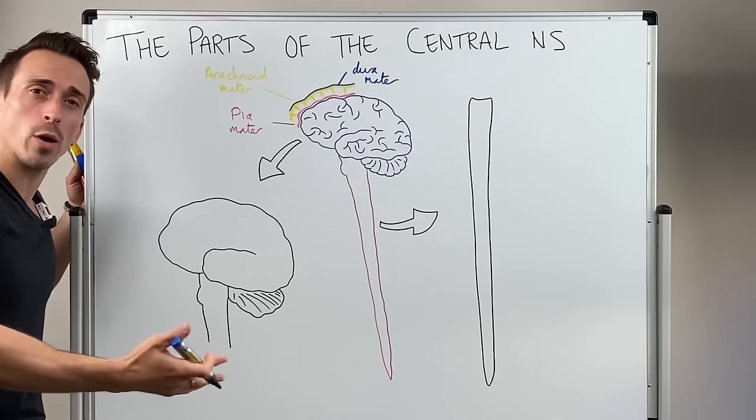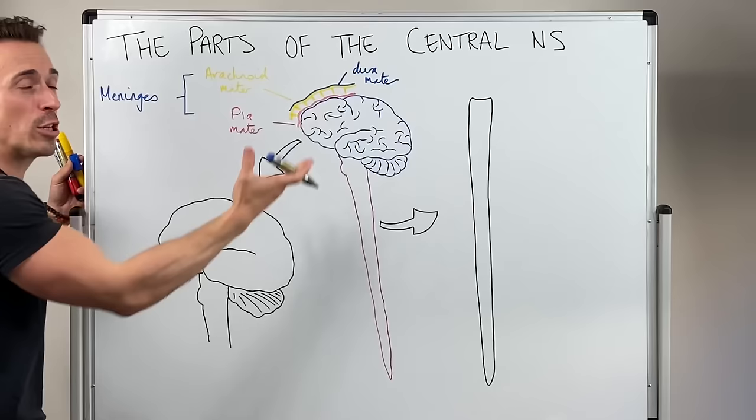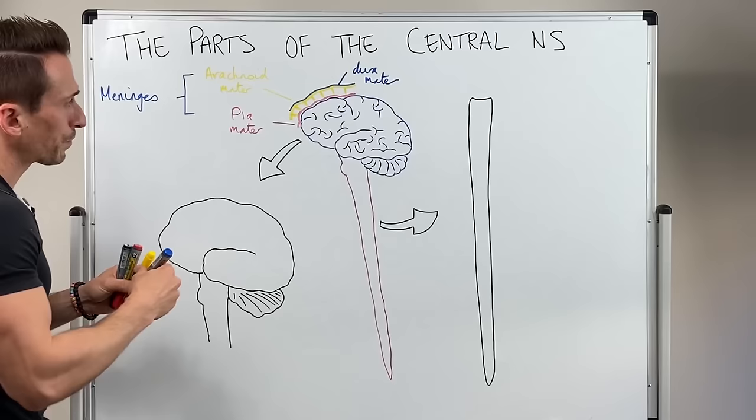On top of the dura mater is where we have our skull. And again, cumulatively these three layers are called our meninges or meningeal layers. And if they have some sort of infection or inflammation associated with them, that's called meningitis.